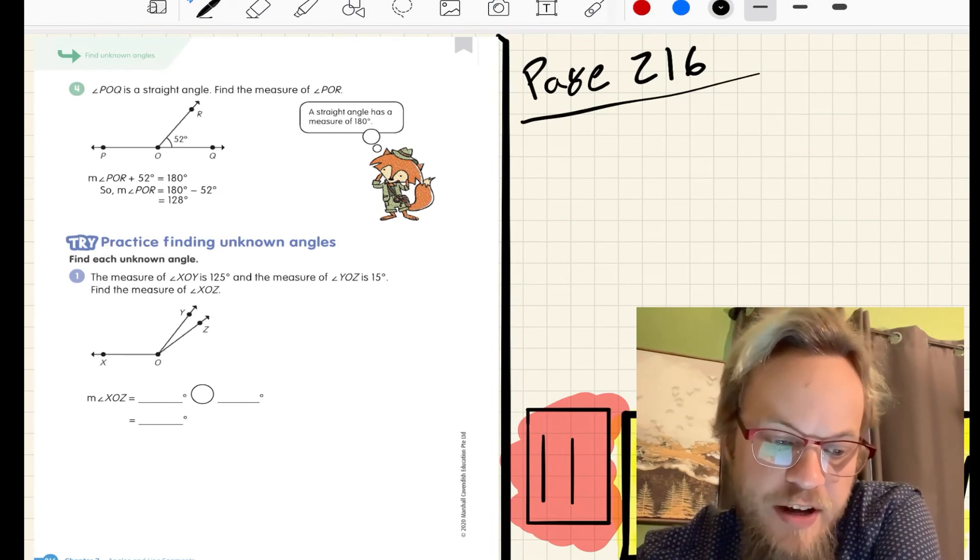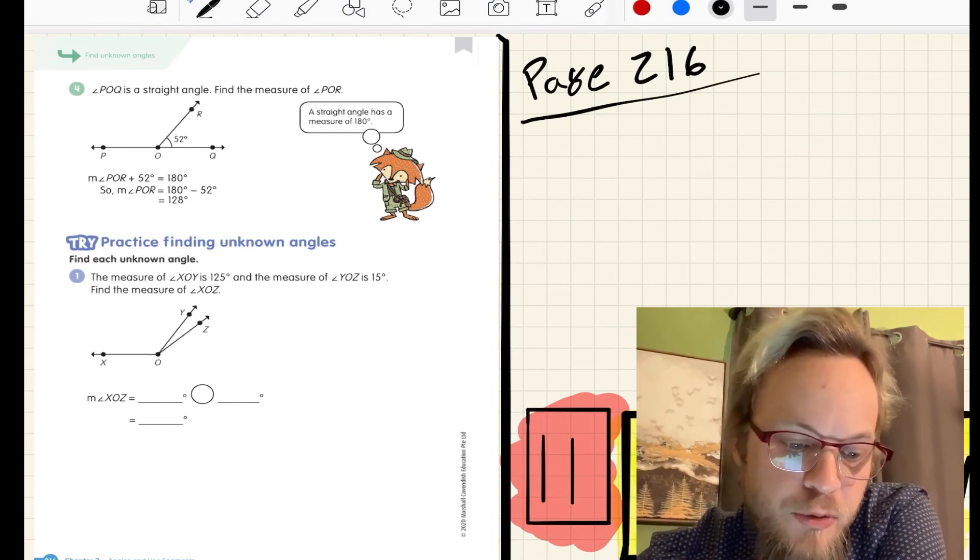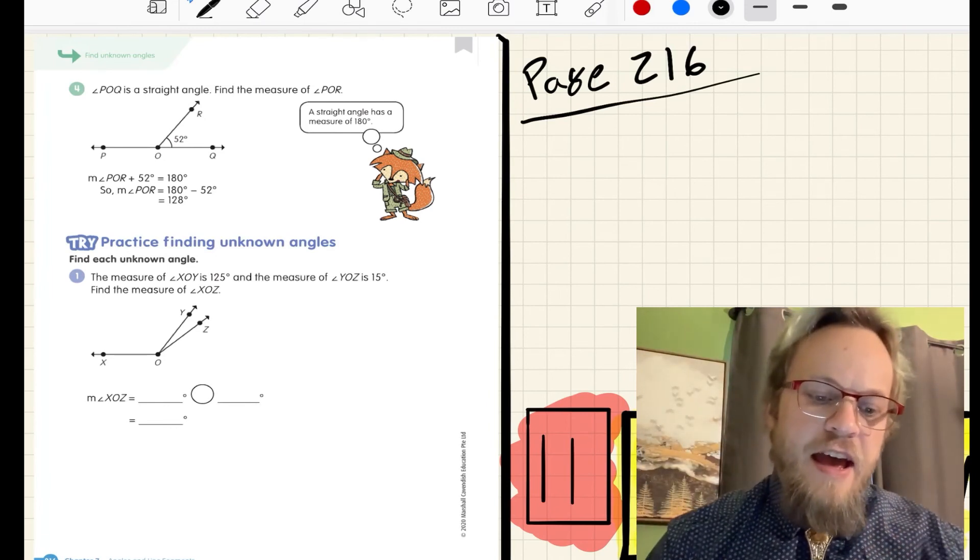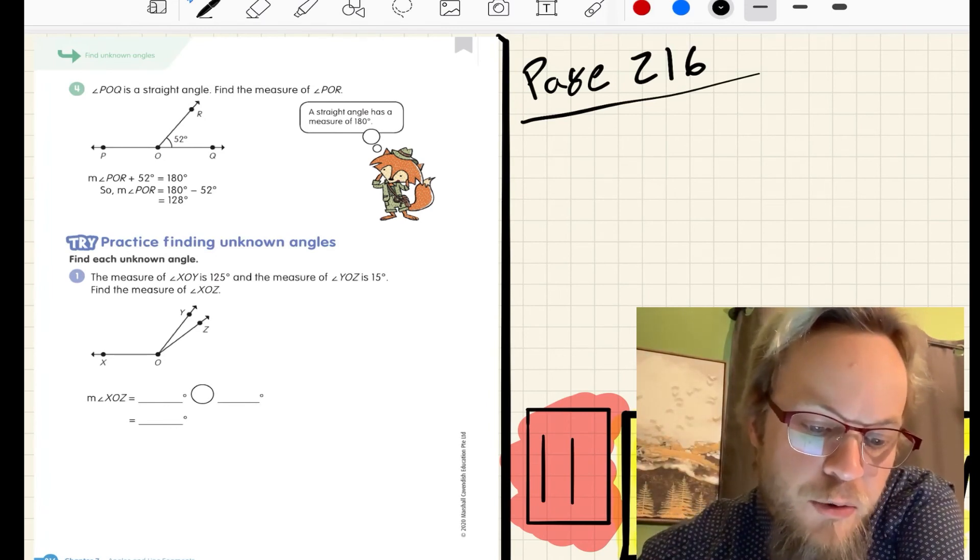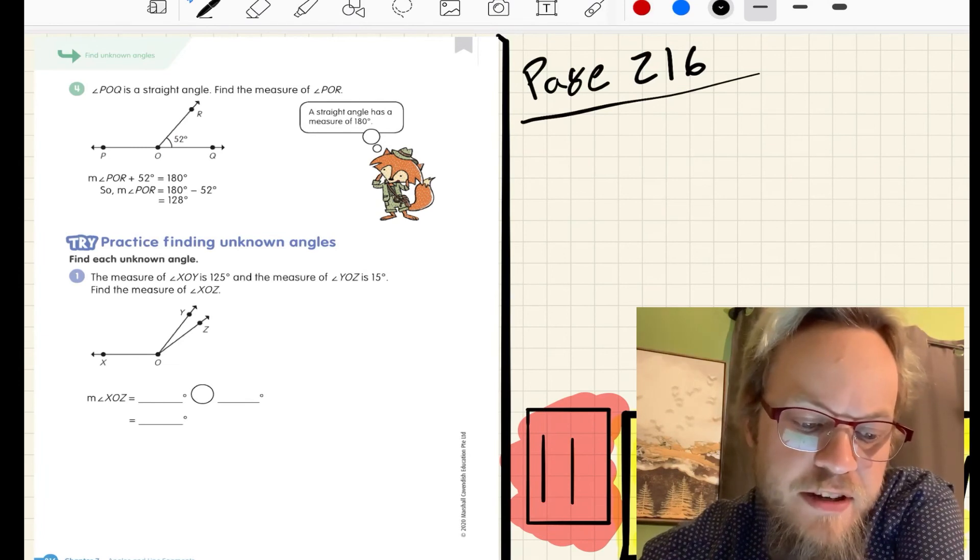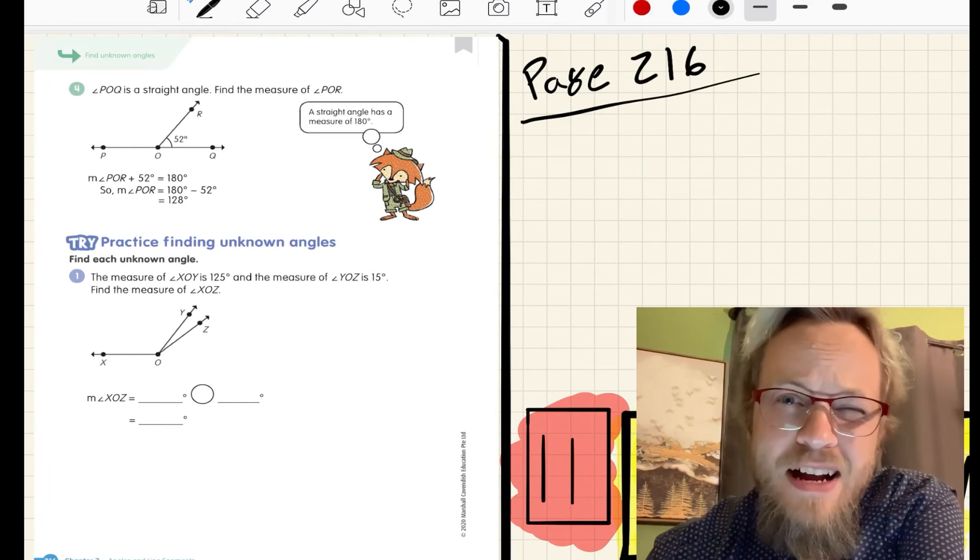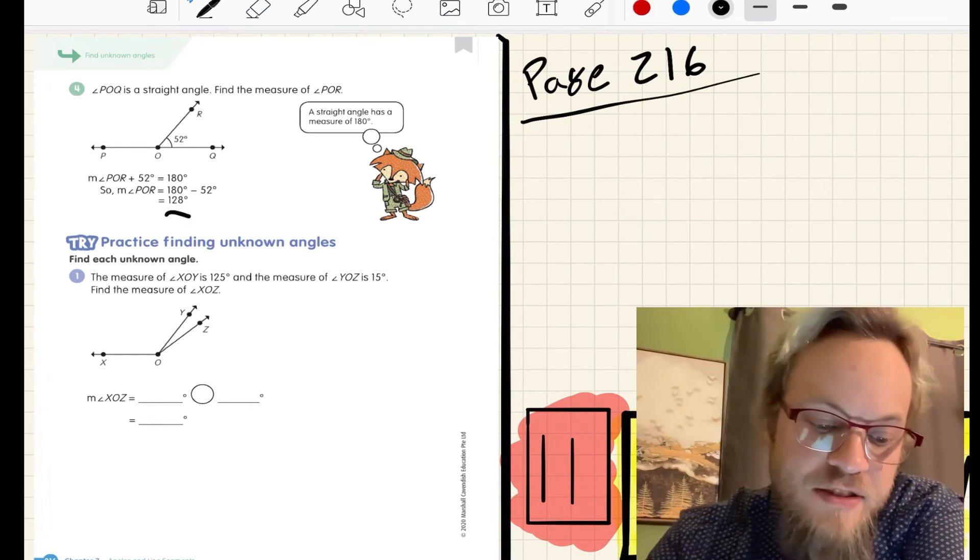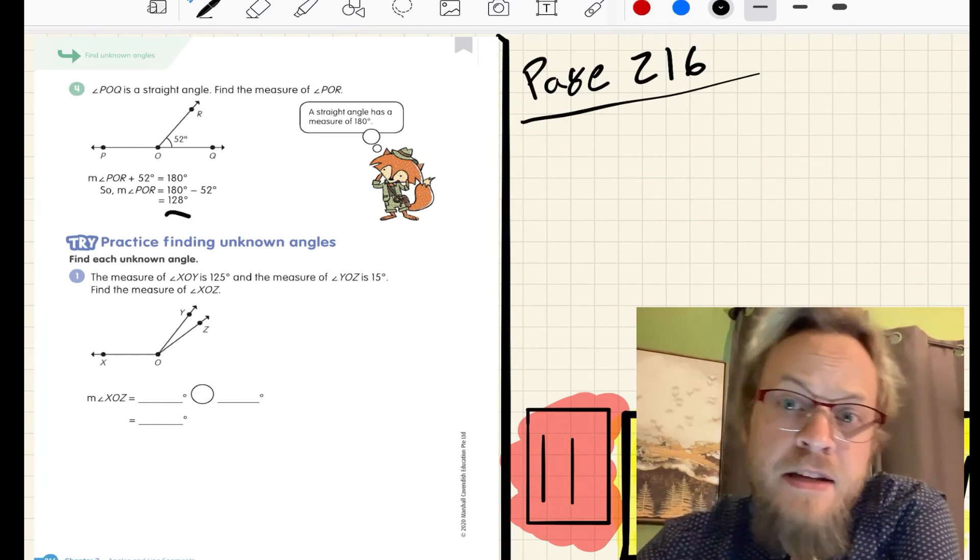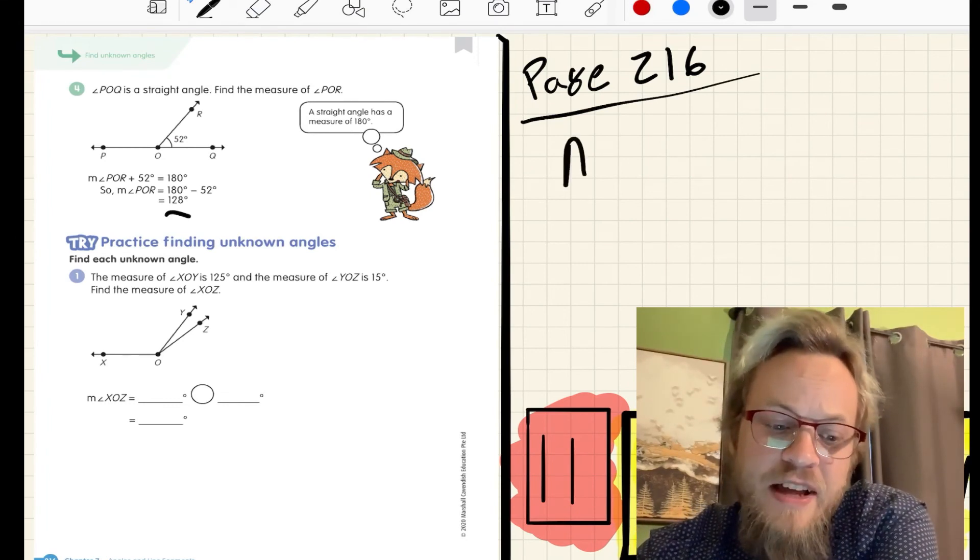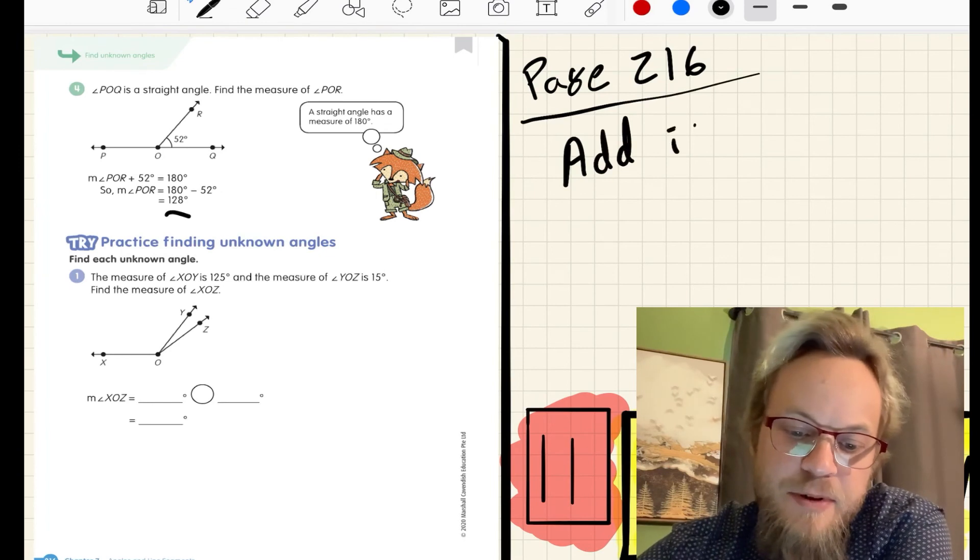Number four, another example. POQ is a straight angle. Straight angles are straight lines. And ROQ is 52 degrees. We need to figure out what POR is. Again, subtracting 180 minus 52, which gives them 128 degrees. I know this seems like it's going a little quickly. Just remember, add if you know both parts,